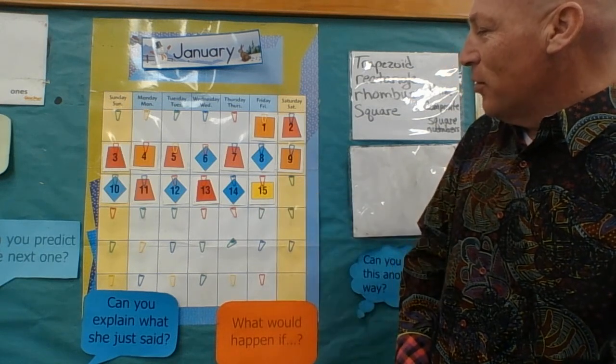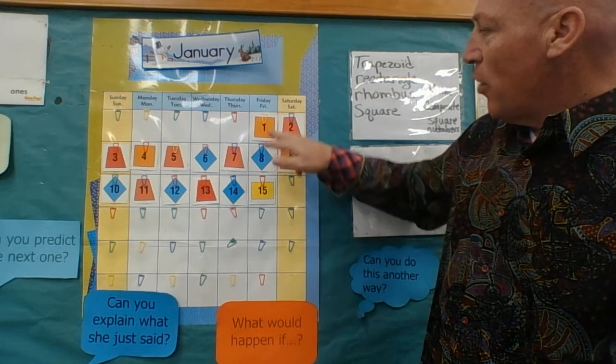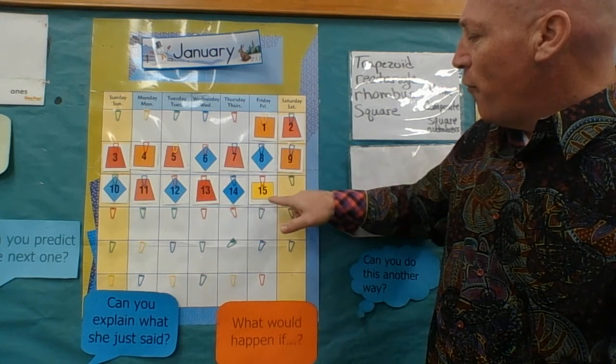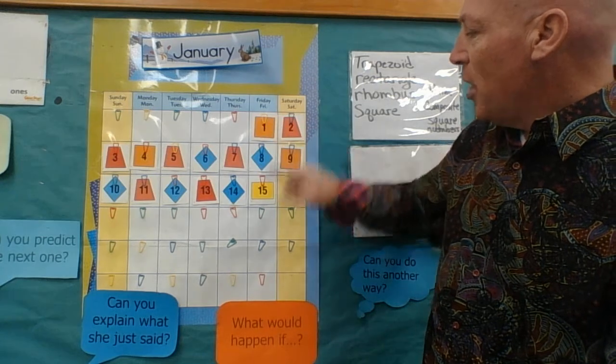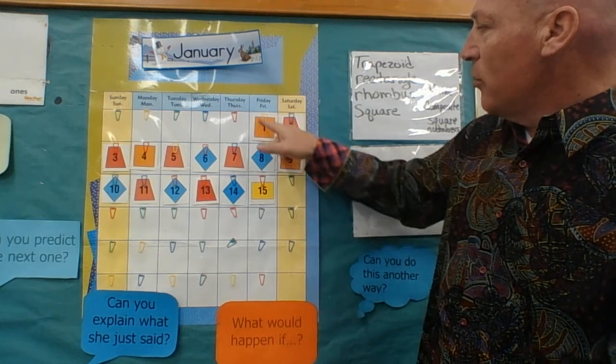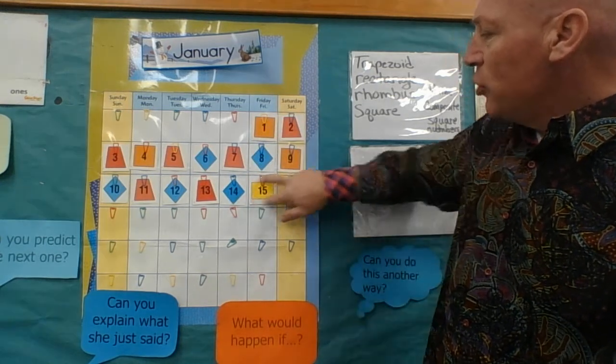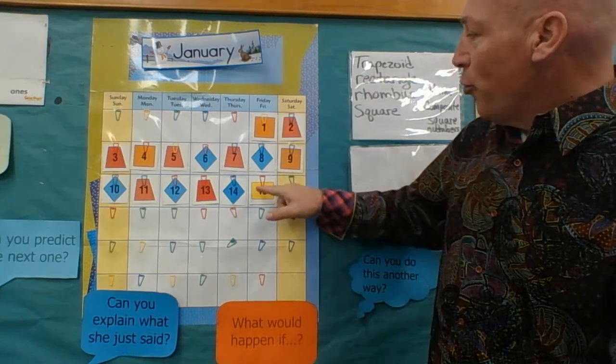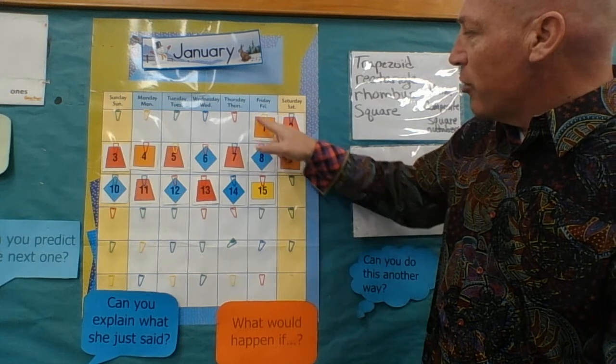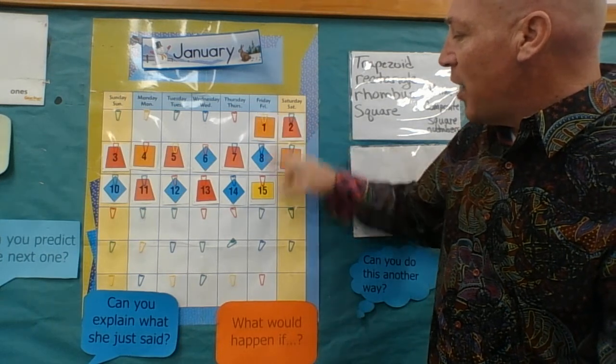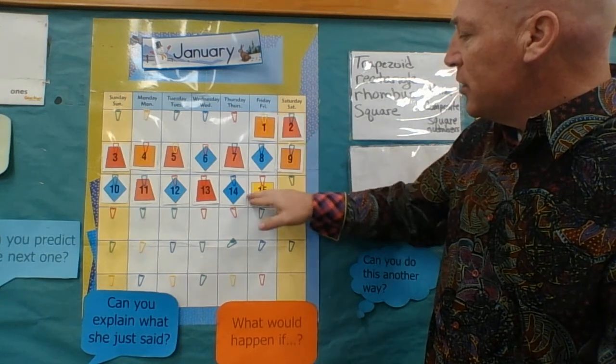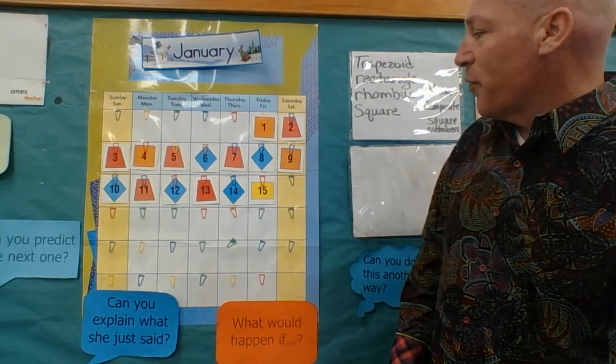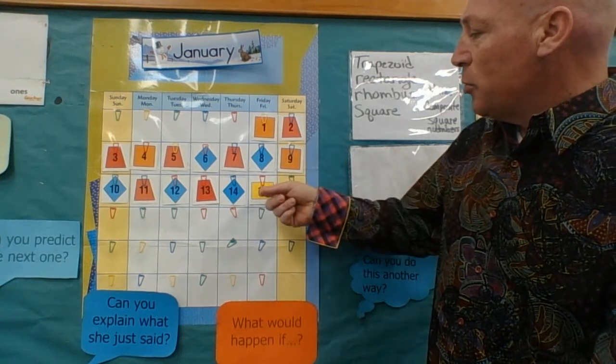Now you can see a rectangle and a square are very similar. They have four vertices, they have four 90-degree angles, they have two sets of parallel lines. But the reason that this is called a square is because all the sides are the same length. And here you have two sides that are one length and then another pair of sides that are a different length, and that's really the only difference between a rectangle and a square.